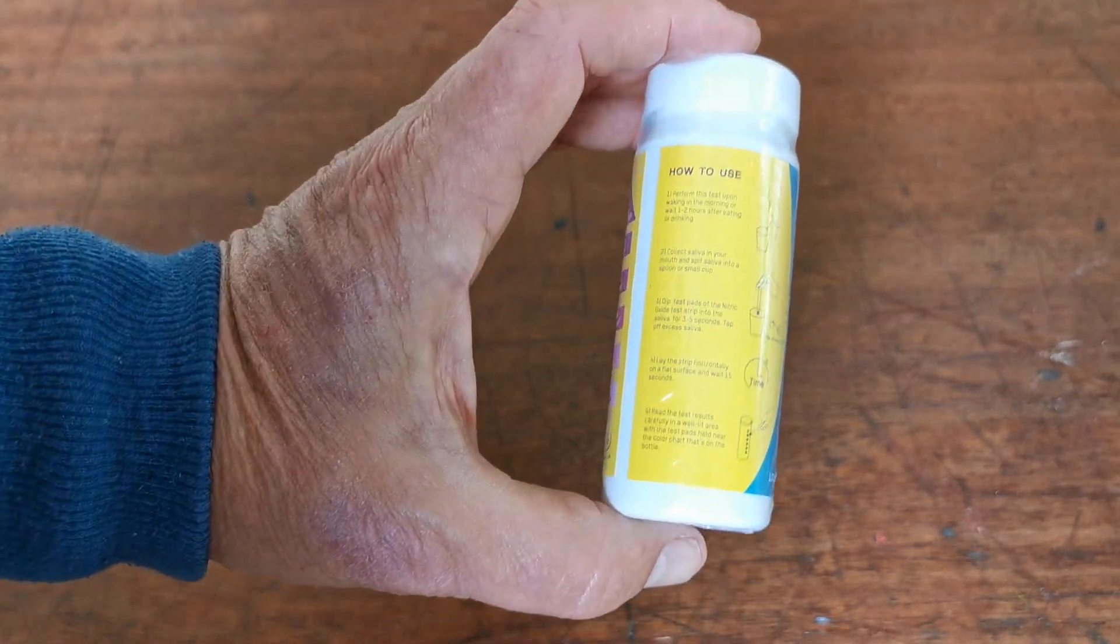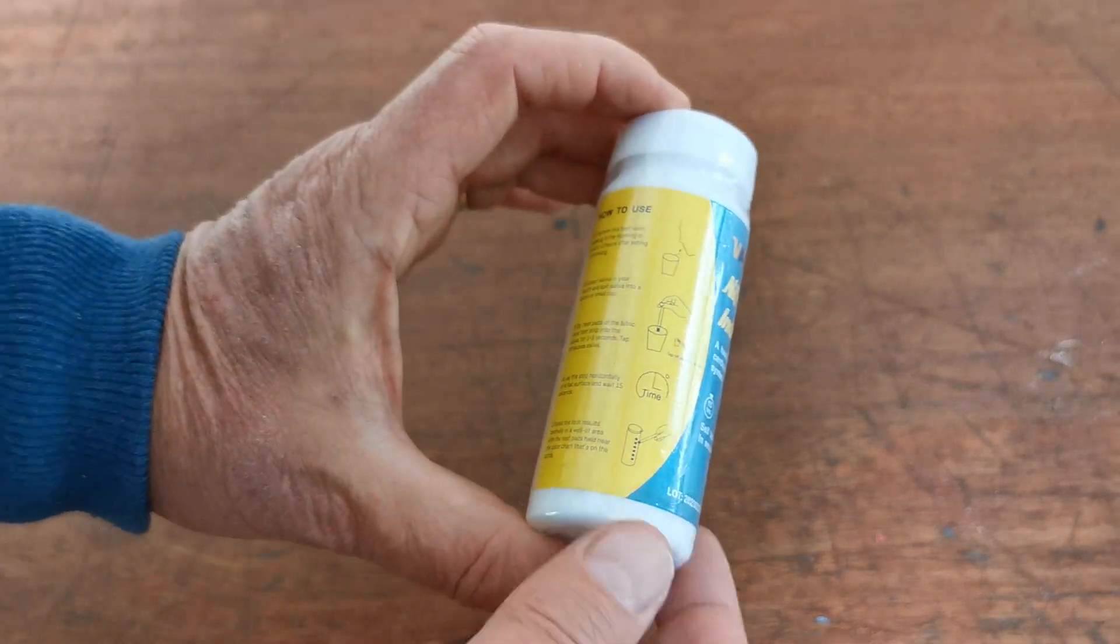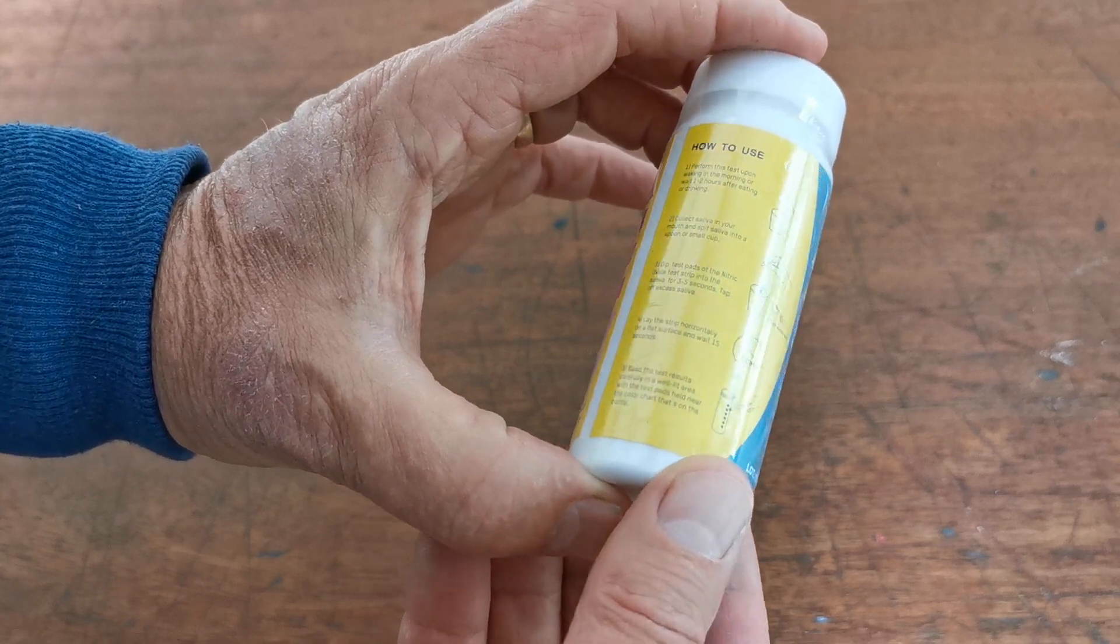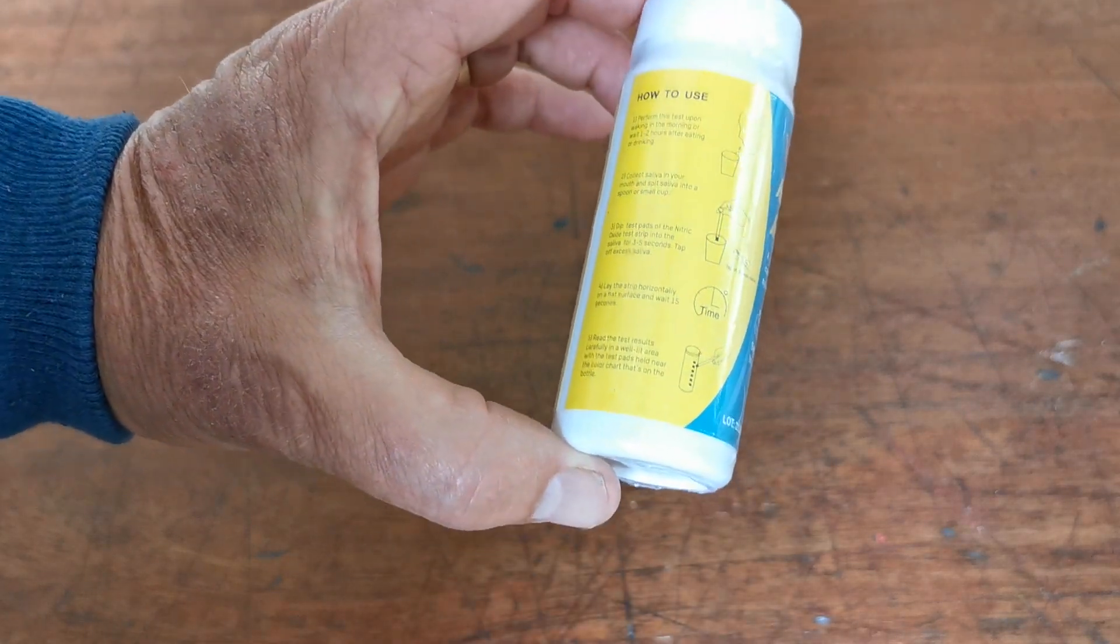I would never recommend placing the test strip directly into your mouth to test. You read these at around 15 seconds after the saliva has been applied for the correct reading—the correct nitrate level in your saliva.